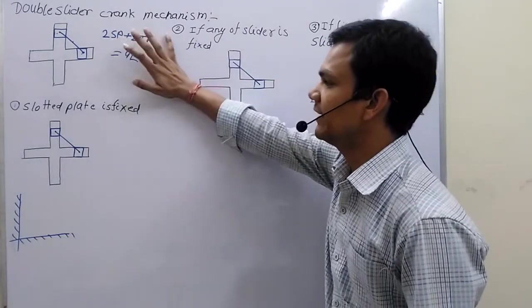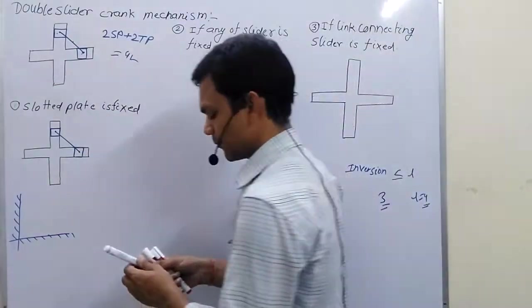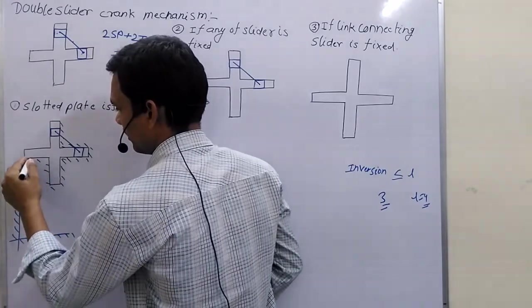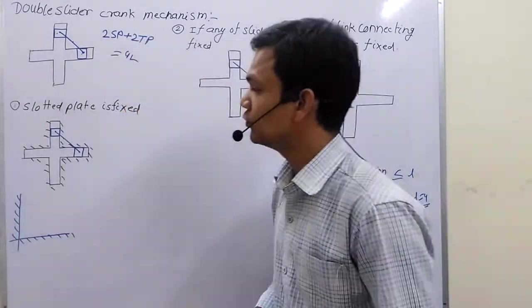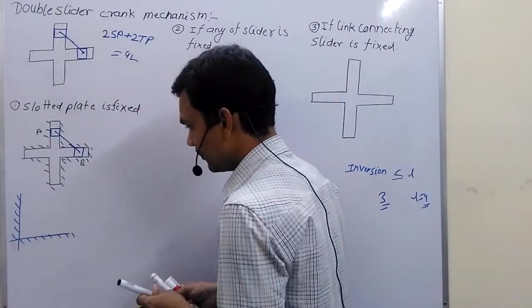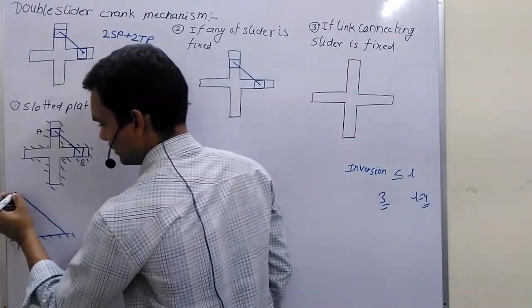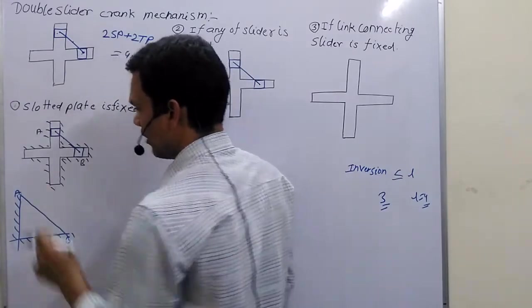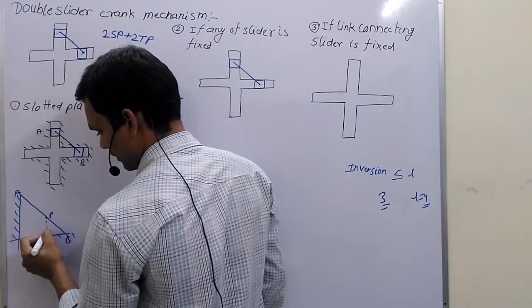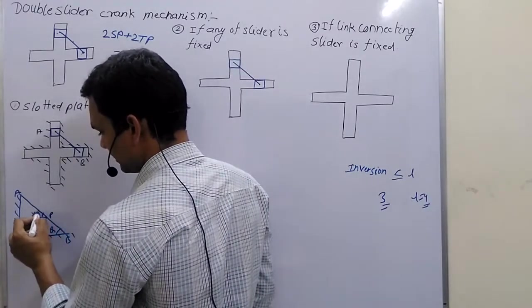To understand the double slider crank mechanism, let me take some examples. First, the slotted plate is fixed. If we fix the slotted plate, then the slotted plate cannot move. Now, if I take any point B on this link, this distance will be Y and this will be X, and this angle will be theta — and this is also theta.